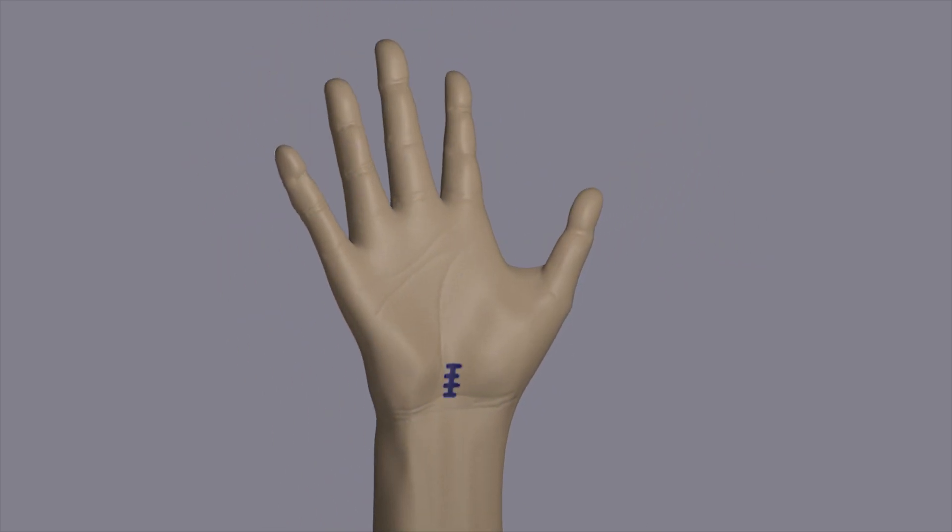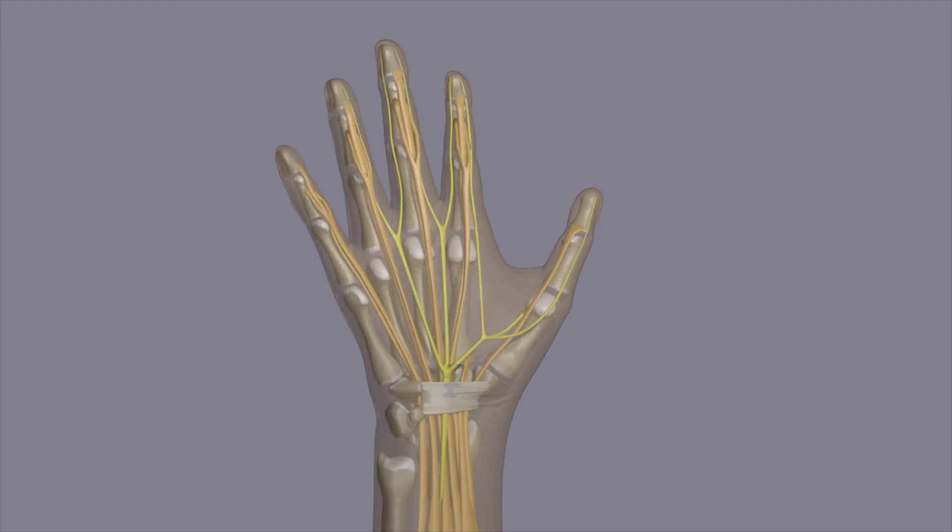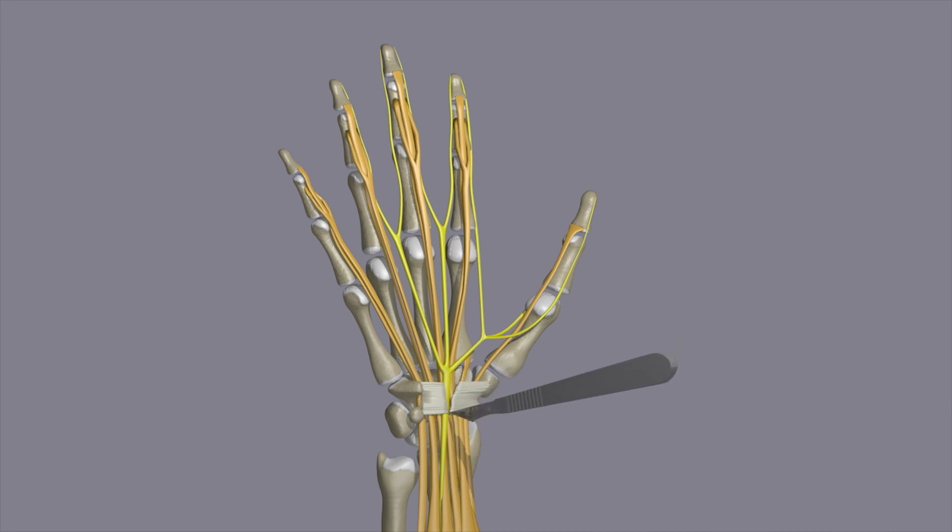A small incision is made at the wrist over the carpal tunnel. The transverse carpal ligament is identified and cut. This relieves pressure within the carpal tunnel.